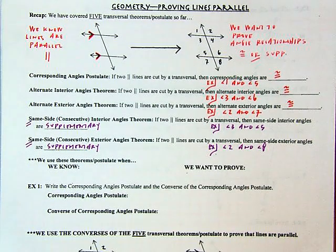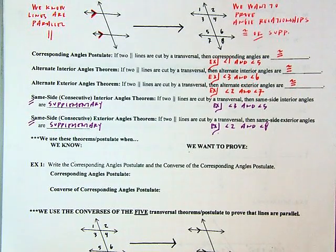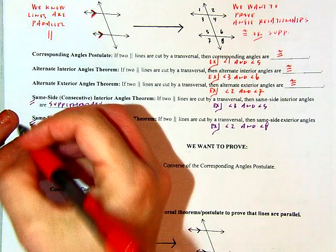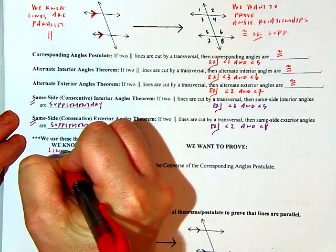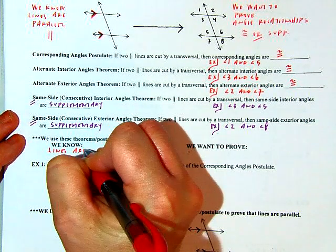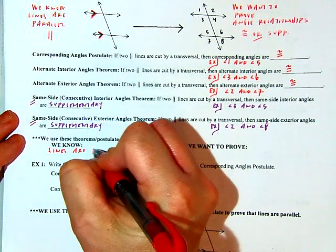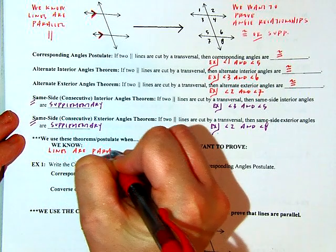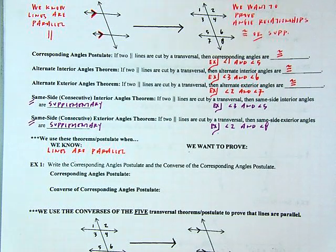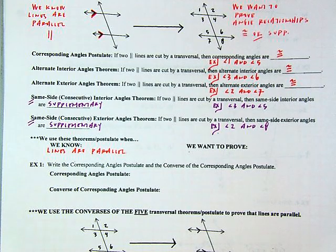To summarize: we use these four theorems and one postulate when we know that the lines are parallel, and we want to prove the angle relationships — that they're either congruent or supplementary depending on the special angle pair.